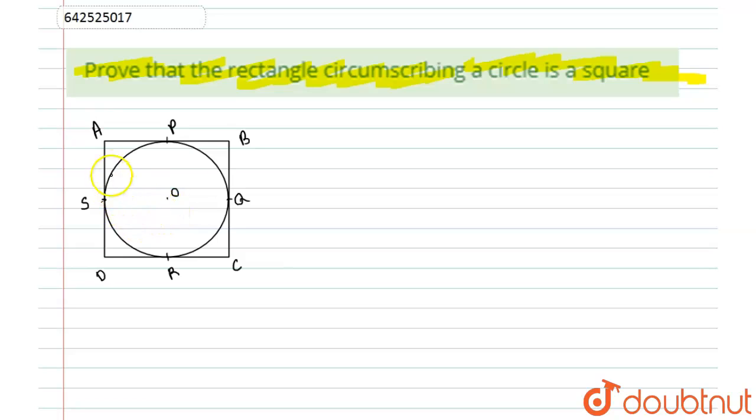The circle is touching the rectangular sides at points P, Q, R, and S respectively. Now what we have to prove: we have to prove this ABCD is nothing but a square. So let's start with this solution.